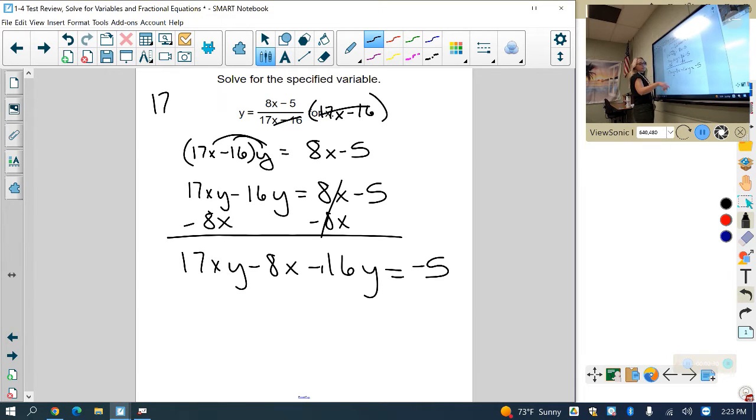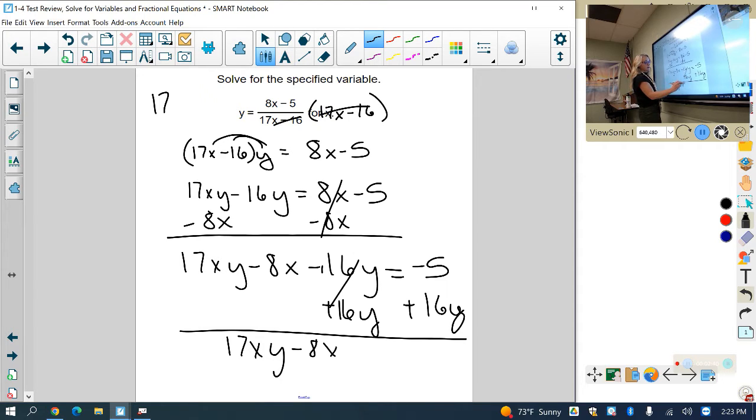Get rid of your 16y because that doesn't have an x in it, so we're going to add 16y to both sides. So I have 17xy minus 8x equals negative 5 plus 16y.